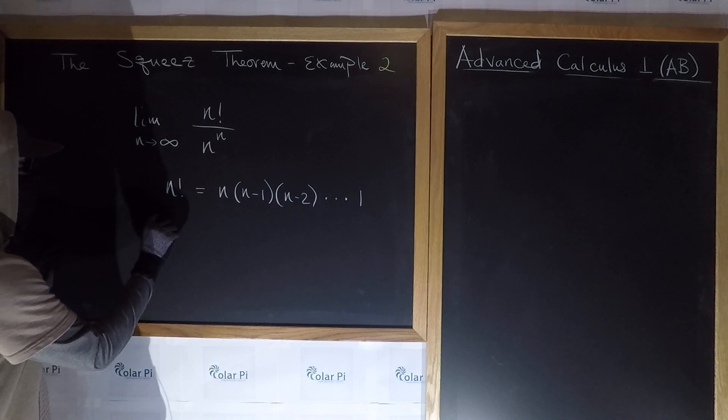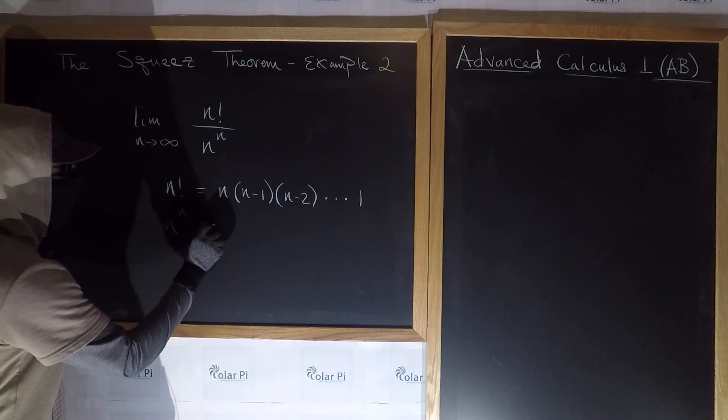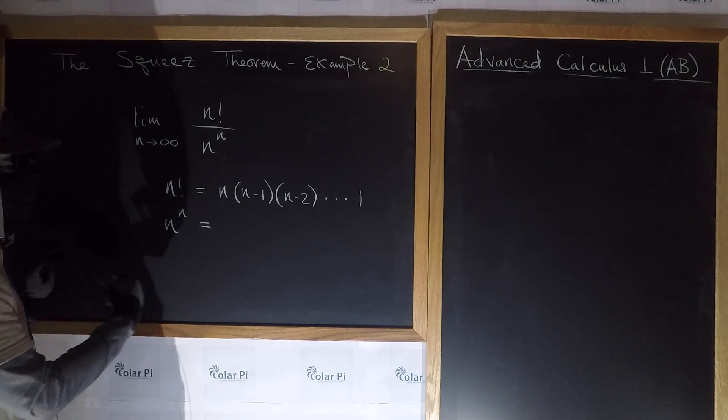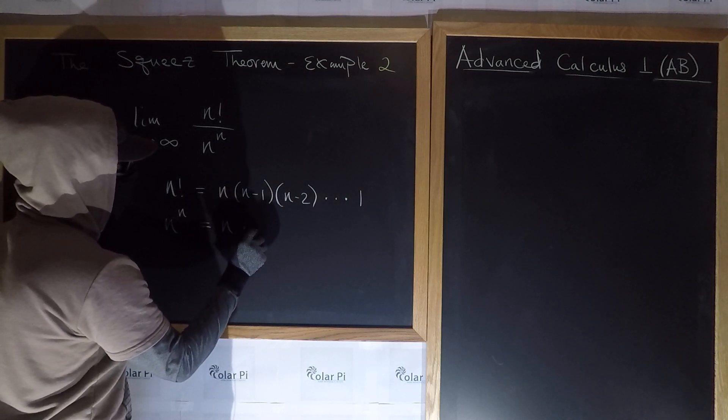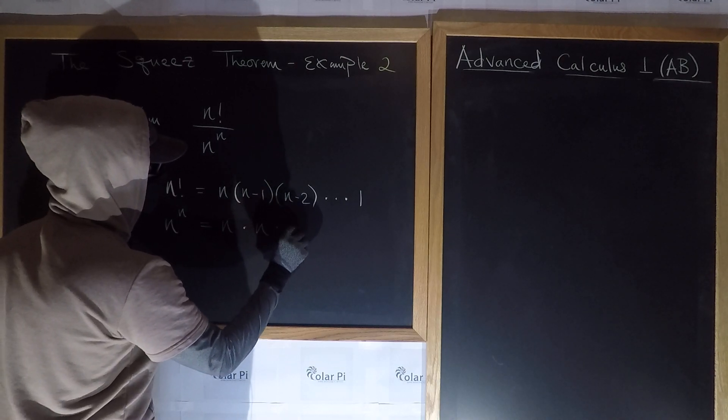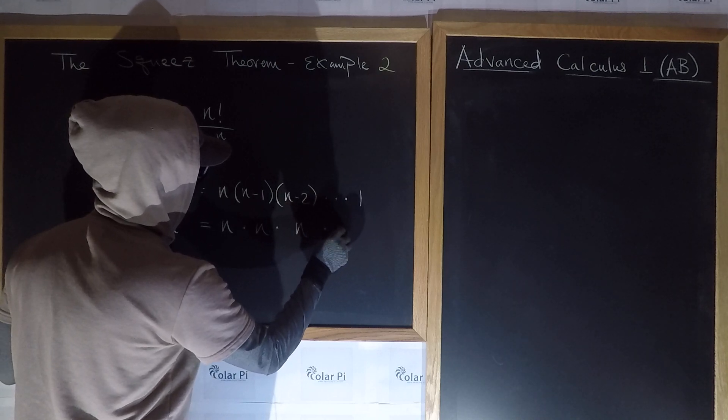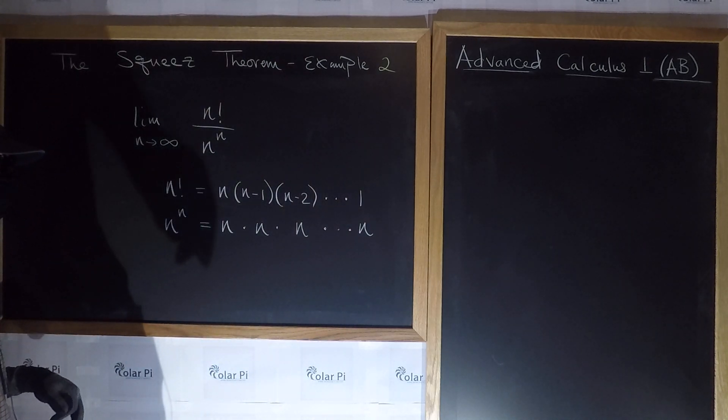And what is n to the n? n to the n will have as many numbers in a product as n factorial, but they're all n's. So n to the n is n times n times n times n, all the way to the nth n.